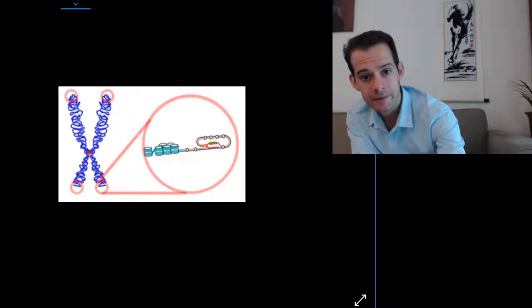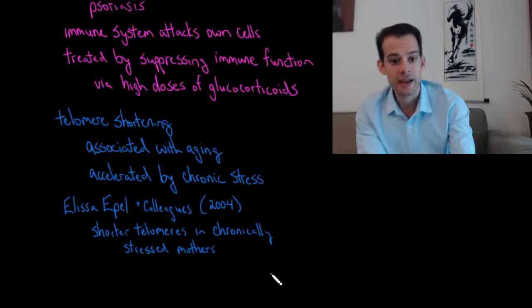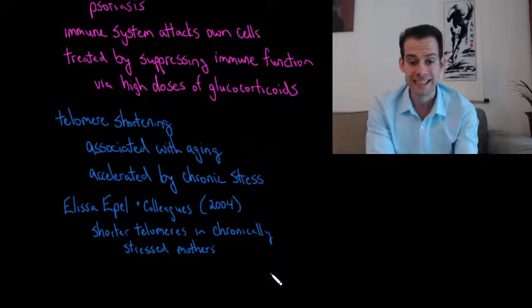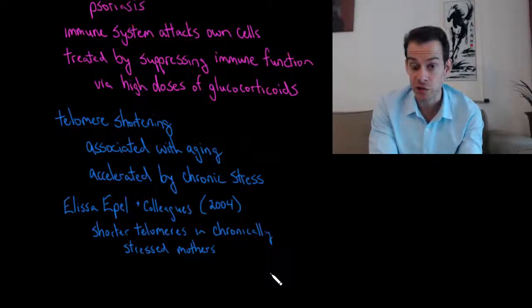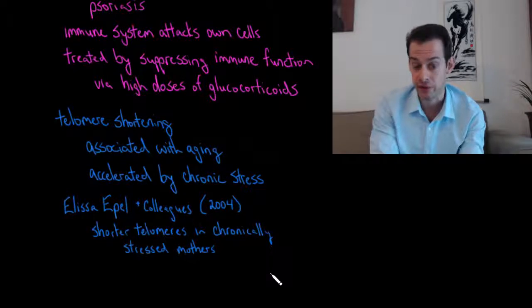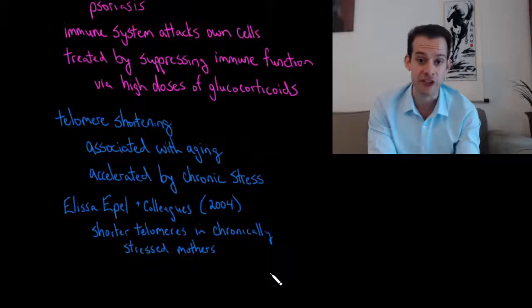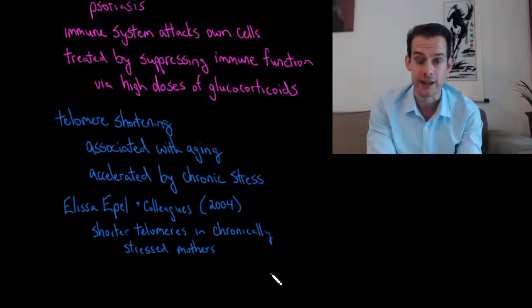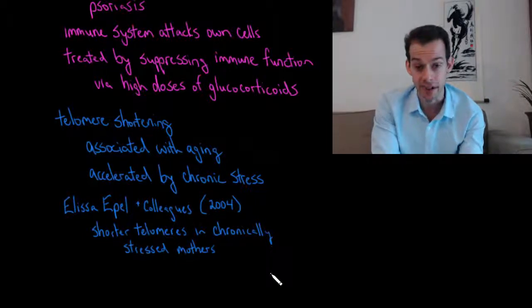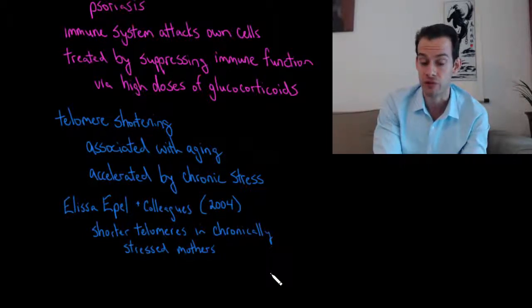And what we see is that stress is associated with acceleration of this shortening of telomeres. So telomeres naturally shorten over time, the more the cells divide. So they're associated with aging. But this process of shortening the telomeres is accelerated by chronic stress. And this is part of the reason why people who are under lots of stress appear to age more quickly. Is they actually are aging. Their telomeres are aging more quickly than people who are under less stress.